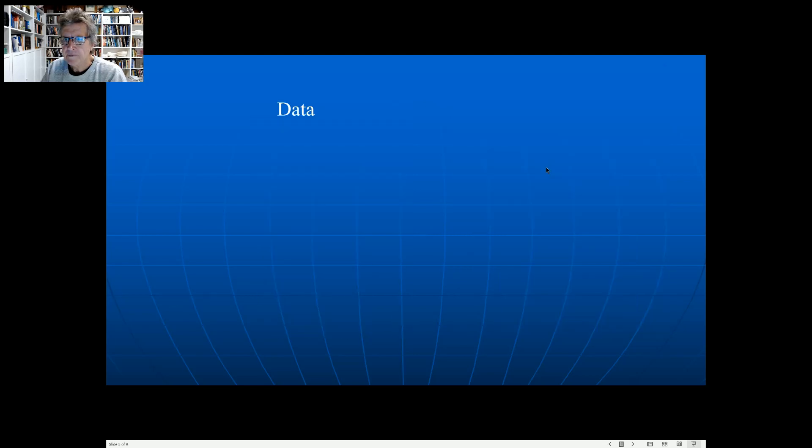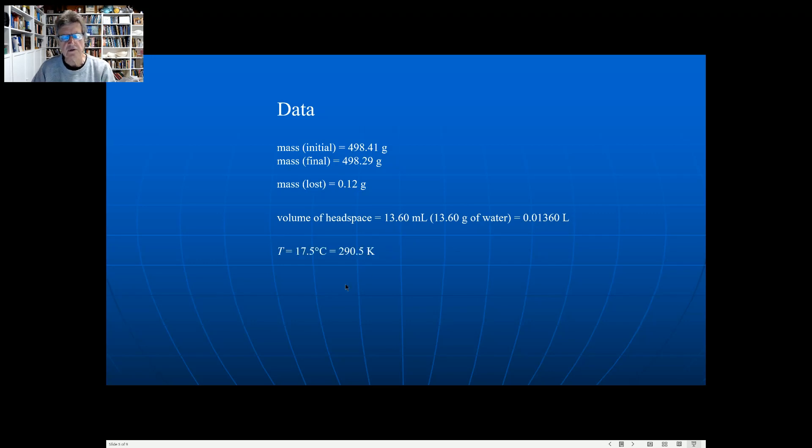Okay, so here's my data. The initial mass, if you remember from the electronic balance, 498.41, then I open the top and I've got a final mass of 498.29. So there's a difference of 0.12 grams, that's the carbon dioxide. So that's the mass of carbon dioxide in that headspace. Now the volume of the headspace was 13.60 mils because I needed 13.60 grams of water to fill it up. Now if you divide that by a thousand, you get 0.01360 liters, okay. And the temperature you saw, 17 and a half degrees, well for the gas laws I need that in Kelvin, so I've added 273 to it, so it's 290.5 Kelvin.